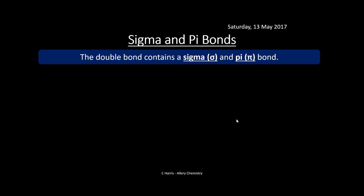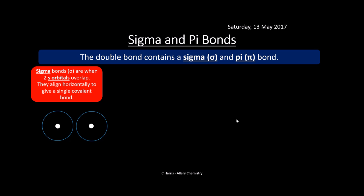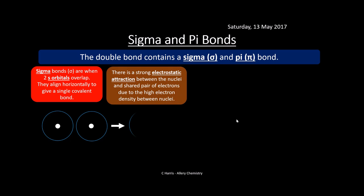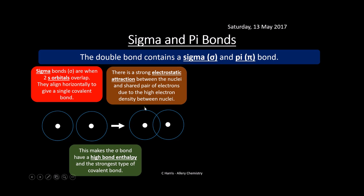We need to know about sigma and pi bonds. A double bond contains both a sigma and a pi bond. Sigma bonds are basically two S orbitals that overlap horizontally, giving a single covalent bond. There's a strong electrostatic attraction between the nuclei and the shared pair of electrons because of the high electron density between them. Sigma bonds have a high bond enthalpy — they are the strongest type of covalent bond.